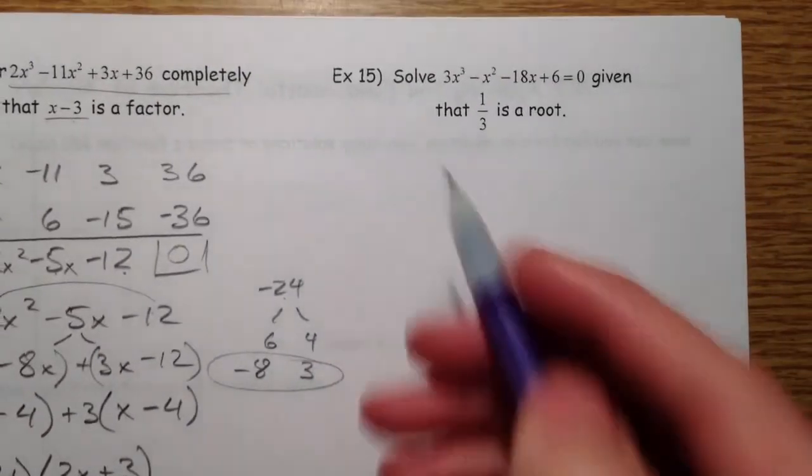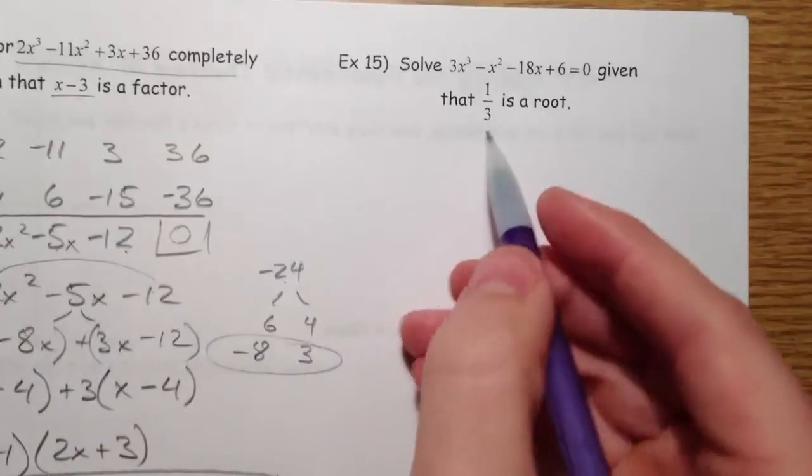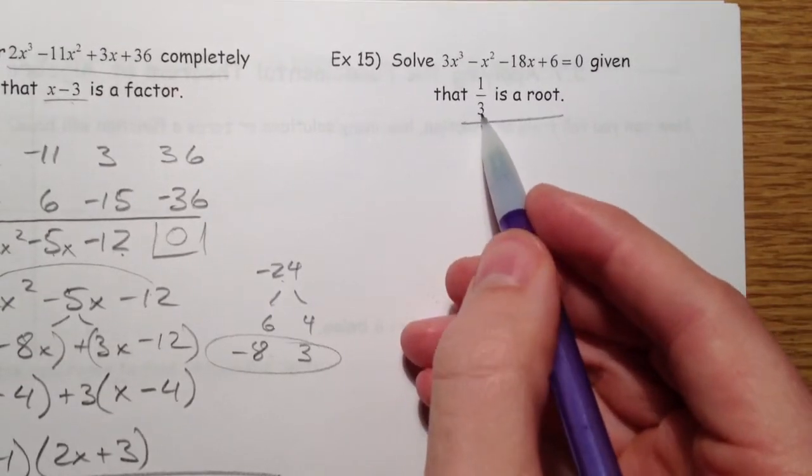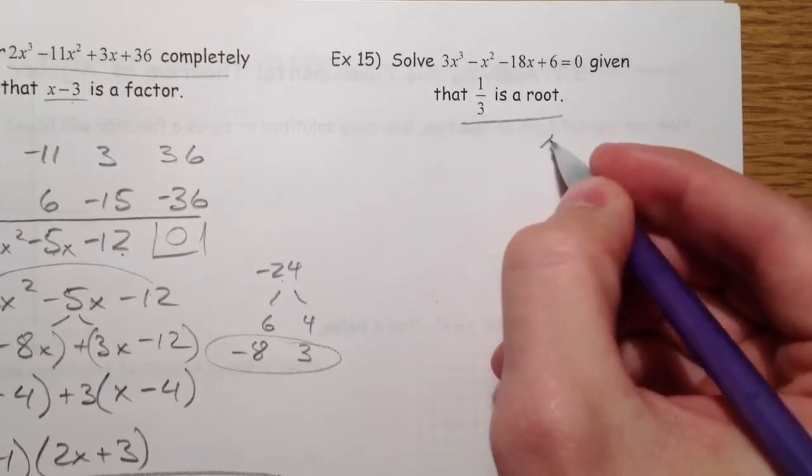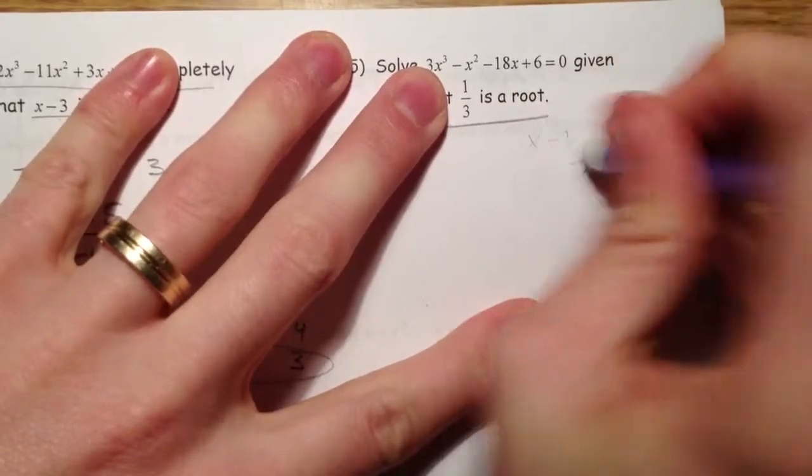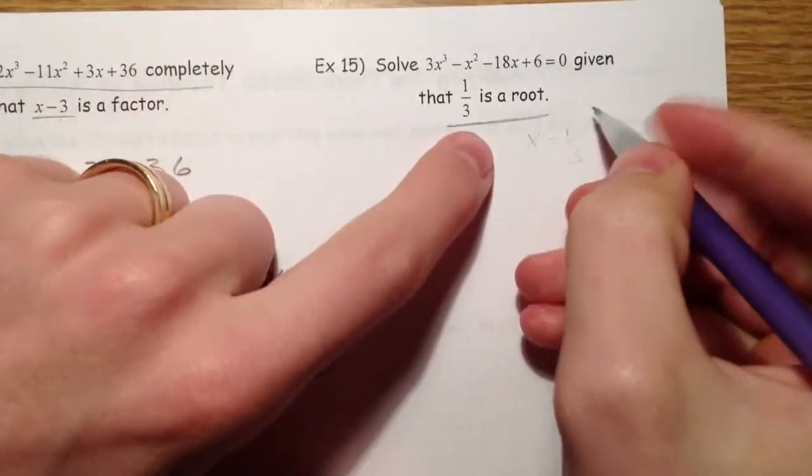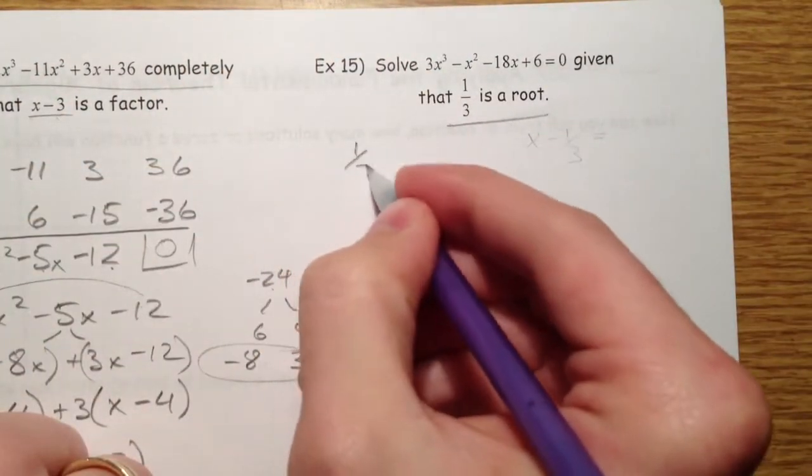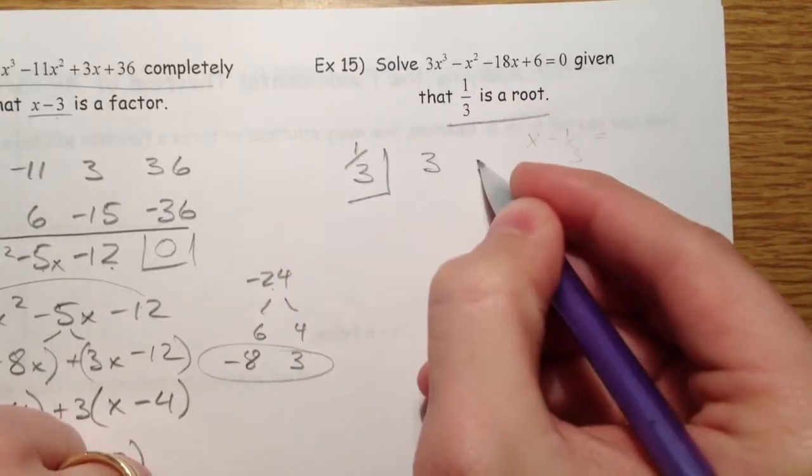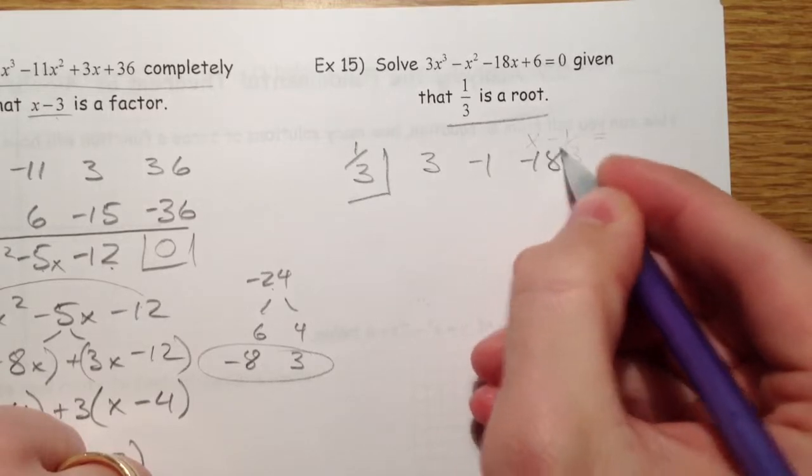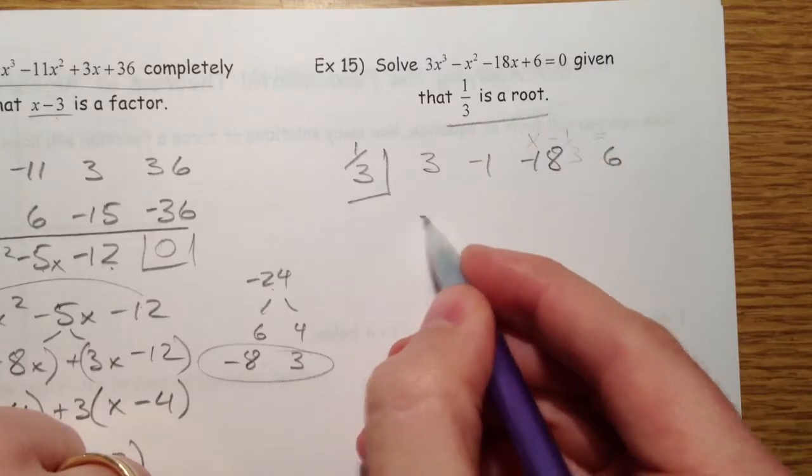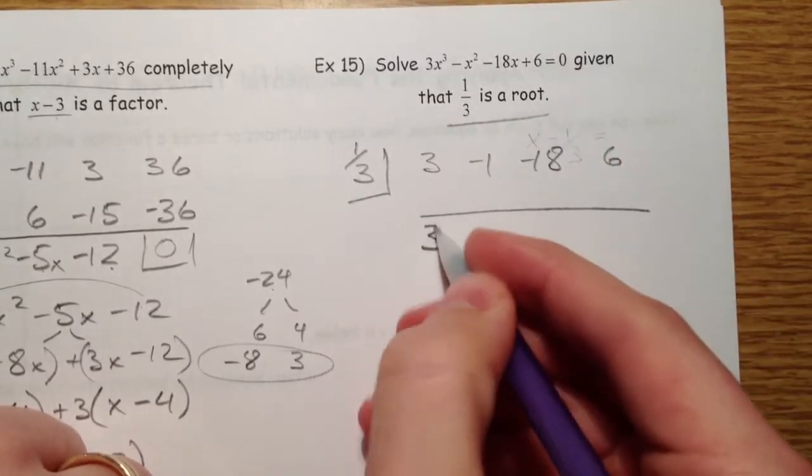Alright. A similar type question. Solve this given that 1 third is a root. So, if 1 third is a root, if we divide by x minus 1 third. Sorry. If x minus... 1 third is a root. If we stick 1 third in the box. You can put 3, negative 1, negative 18, and 6. x cubed x squared x. You always want to double check that you don't need to put a 0 in place. And you have 3.